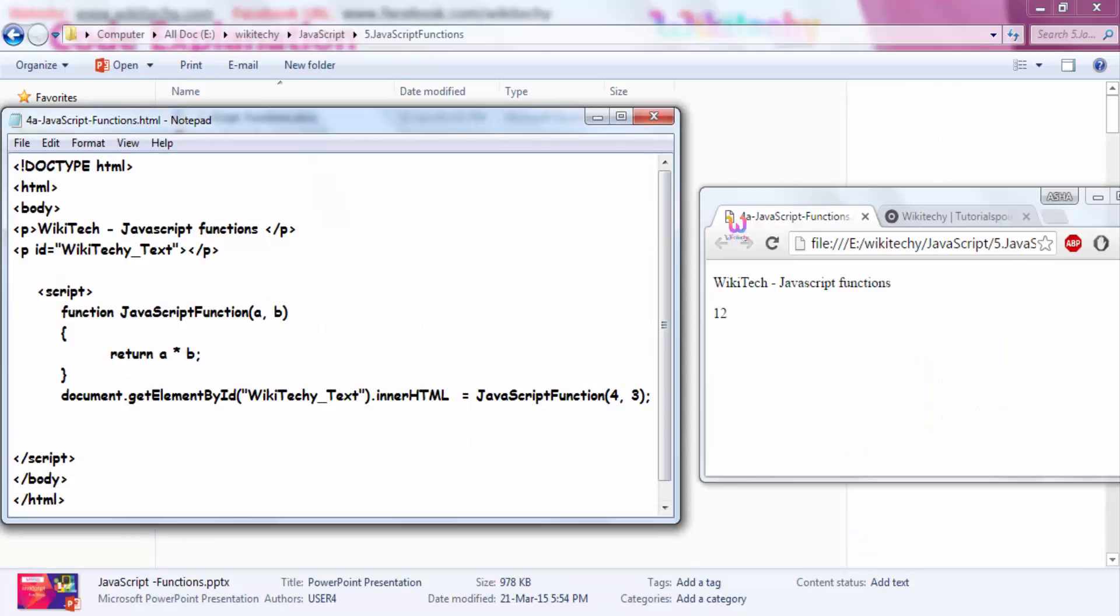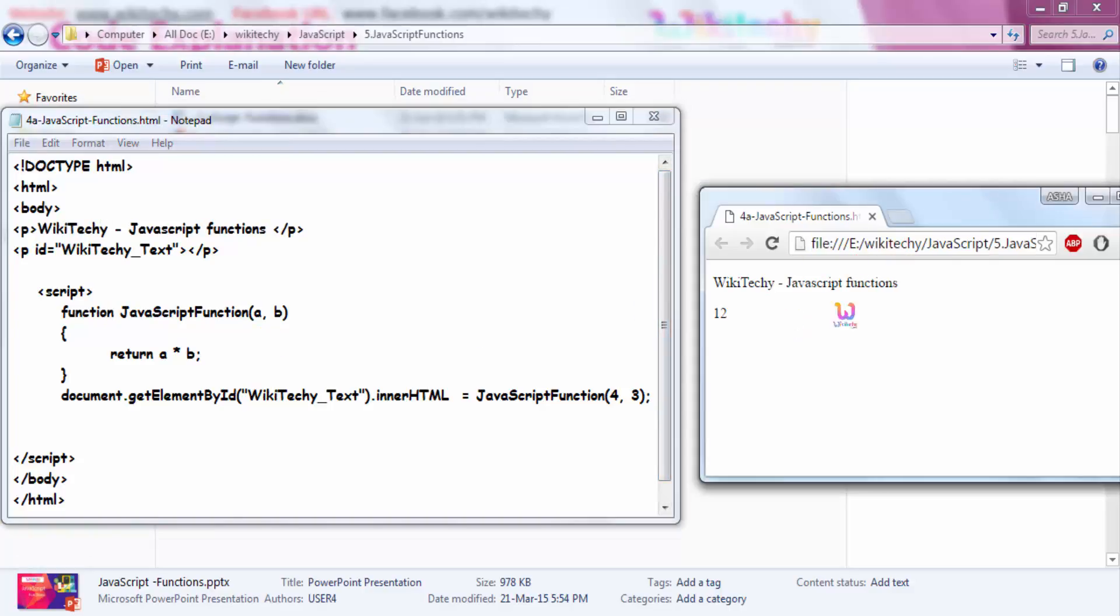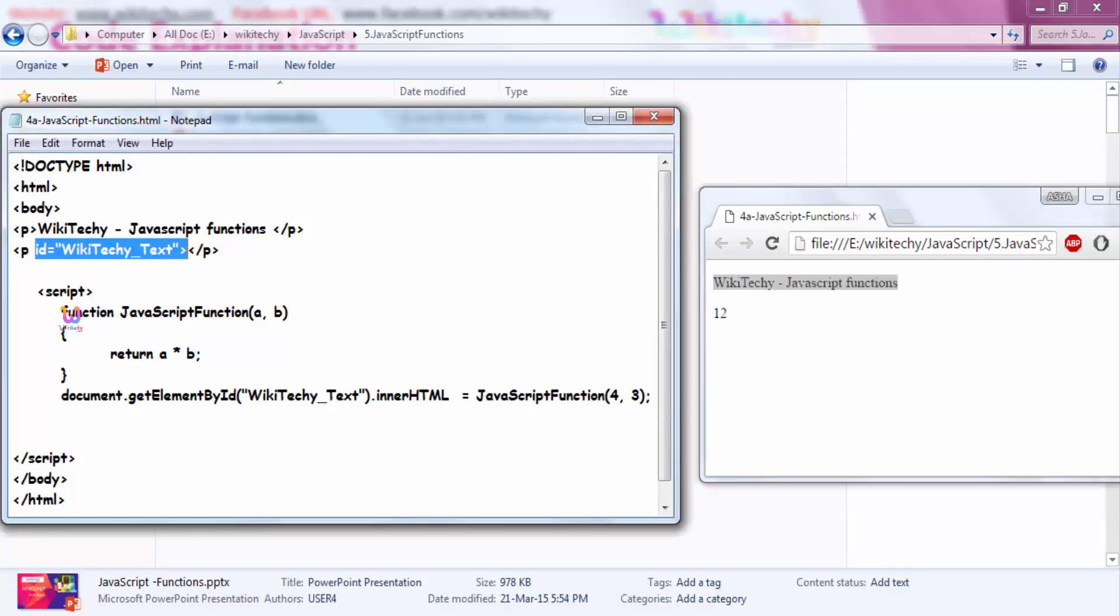Let me go back to my example. You can see the paragraph WikiTechy. Let me make it WikiTechy. I'll save it here. Here is the paragraph tag. The second paragraph has an id. I'm creating a function and this function is returning a value and assigning it to this inner HTML. You can see 4 into 3 is 12.